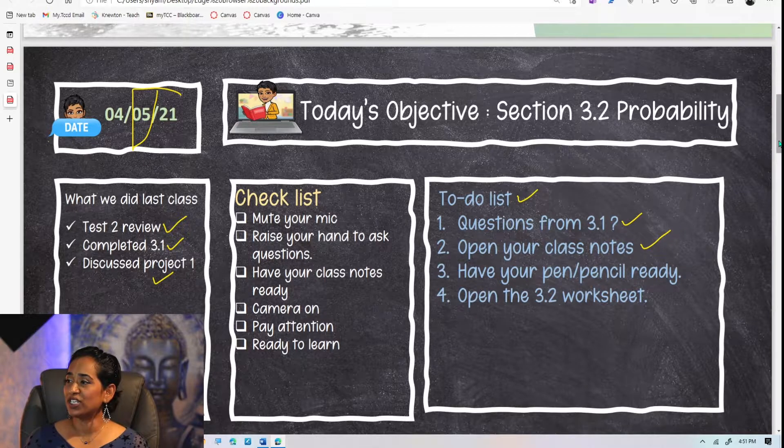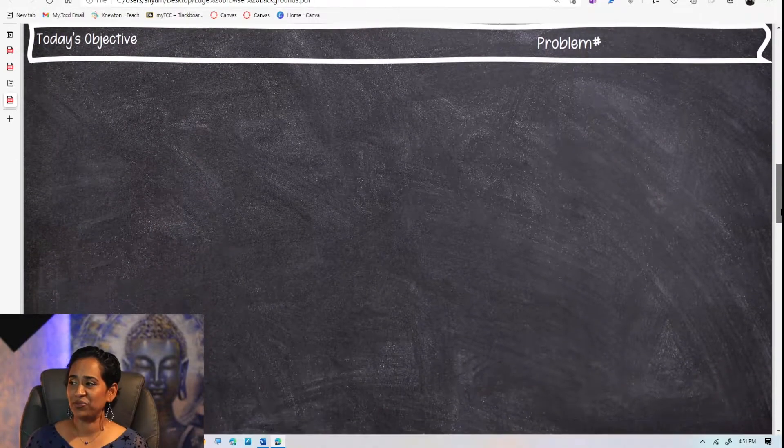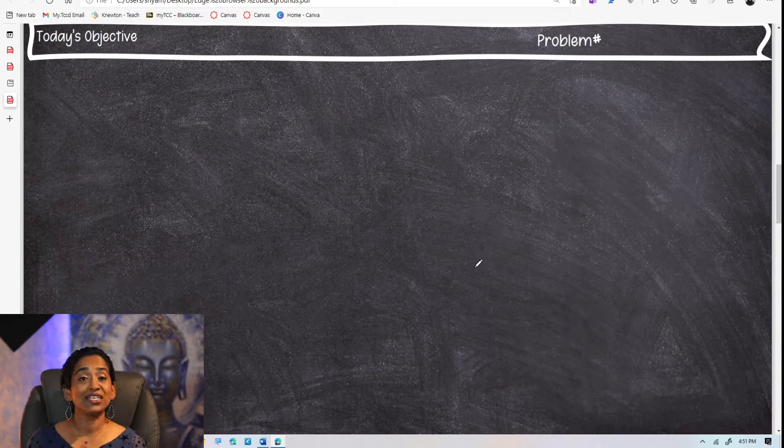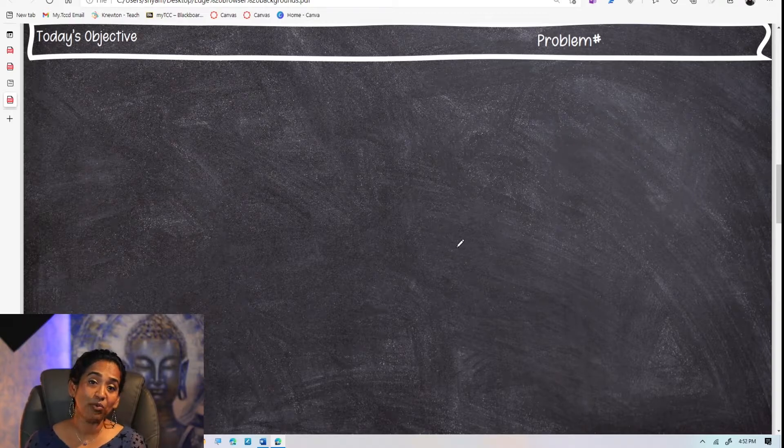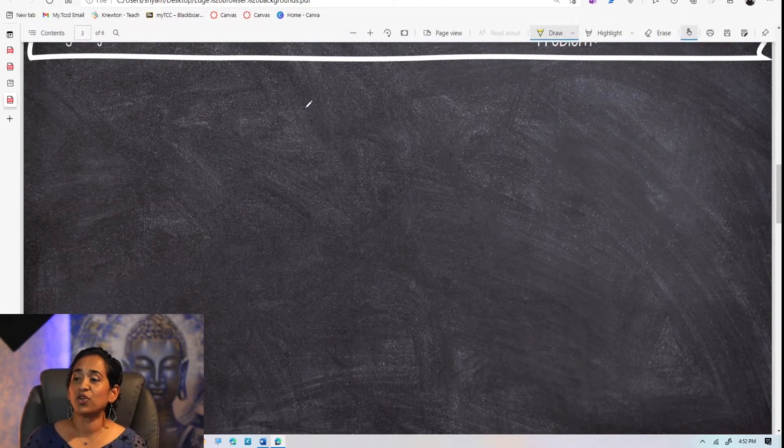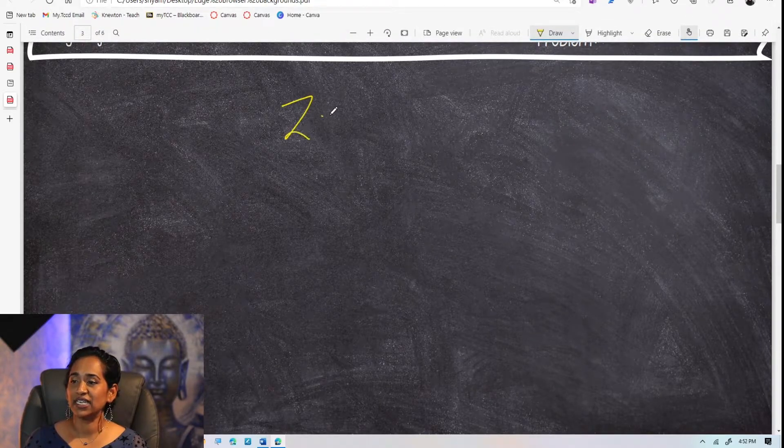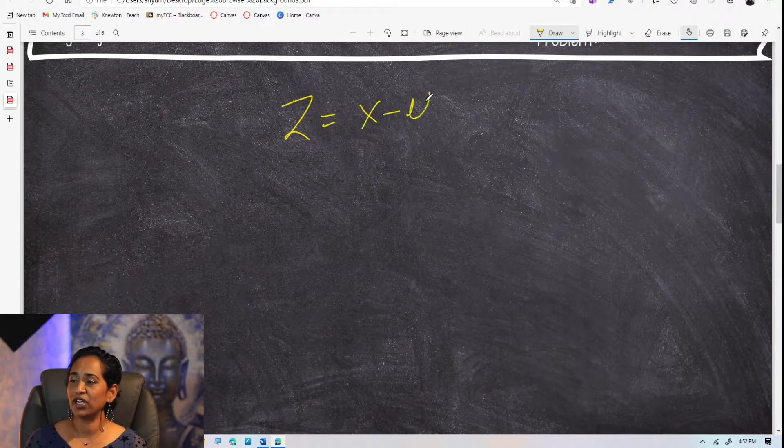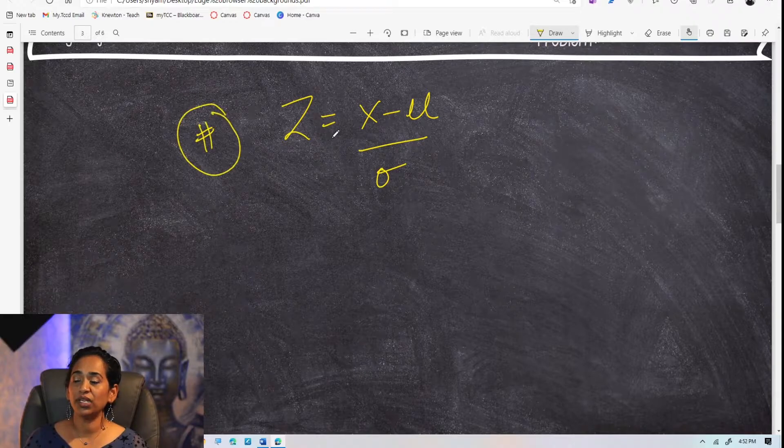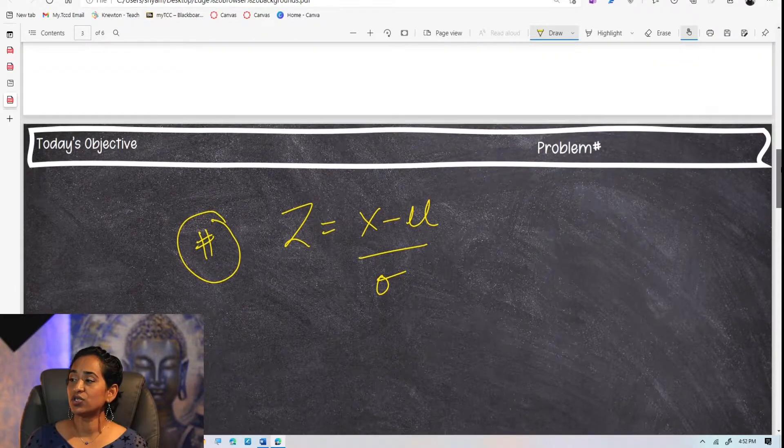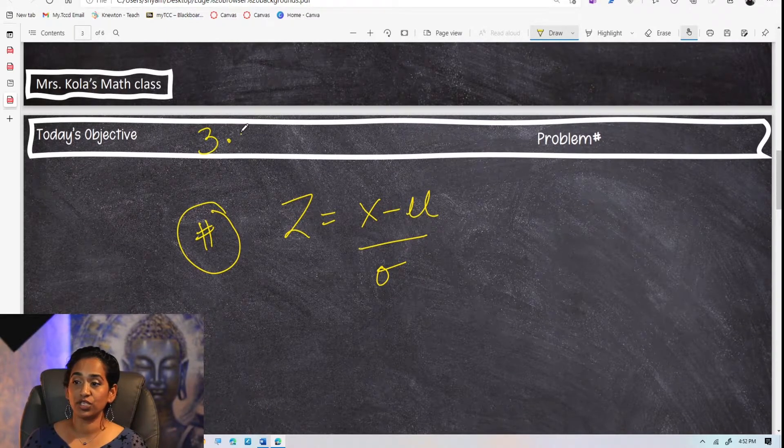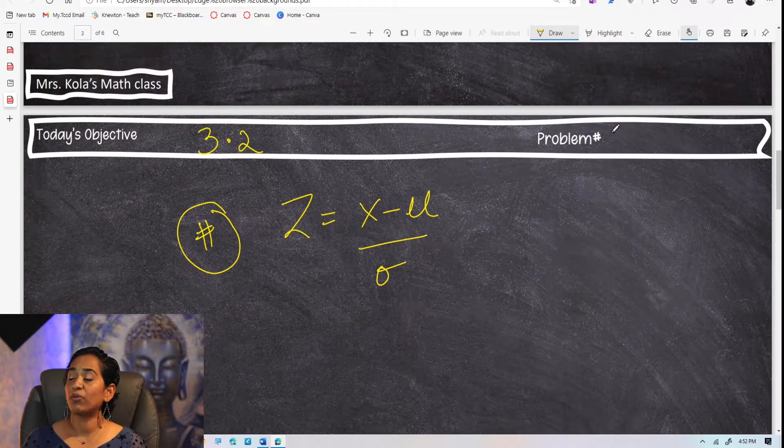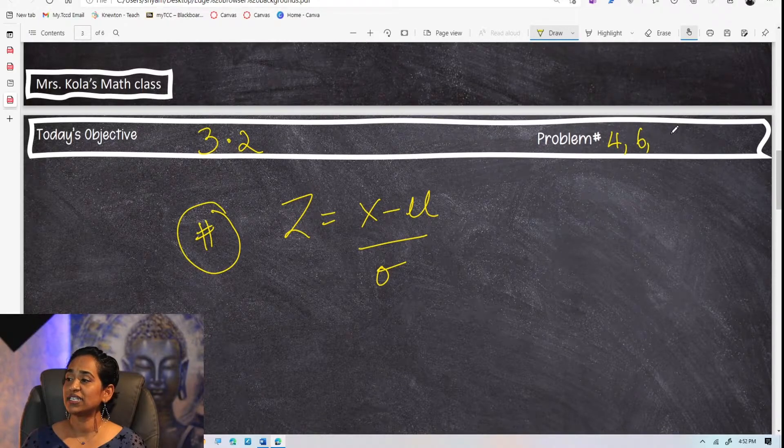Now let's move on to the next slide or the next PDF document. I've created a plain blank PDF, and this kind of mimics your blackboard in the classroom. If I have to go ahead and write, I'm going to say z is equal to x minus mu over standard deviation. I'm going to say important formula, and you can also write down or customize. Again, today's objective was 3.2. The problems that I'm doing are 4, 6, and 9.